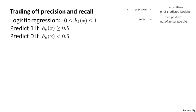As a reminder, here are the definitions of precision and recall from the previous video. Let's continue our cancer classification example where y equals 1 if a patient has cancer and y equals 0 otherwise. We've trained a logistic regression classifier which outputs probabilities between 0 and 1. We predict y equals 1 if h of x is greater than or equal to 0.5, and predict 0 if the hypothesis outputs a value less than 0.5. This classifier may give us some value for precision and some value for recall.